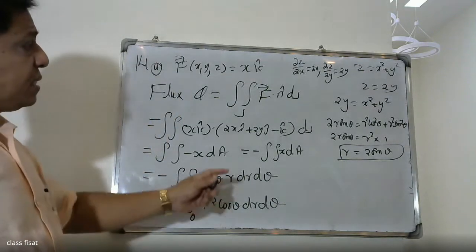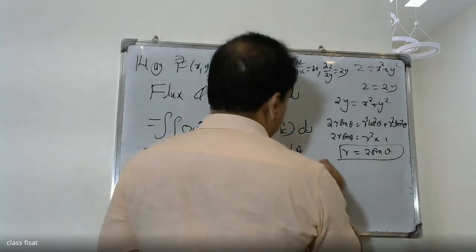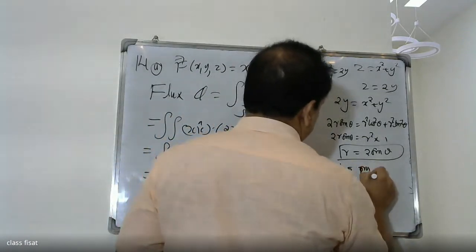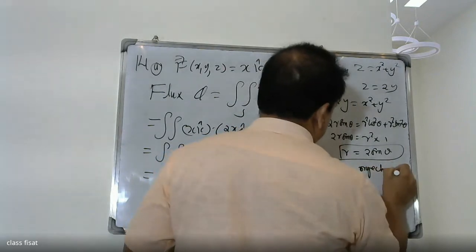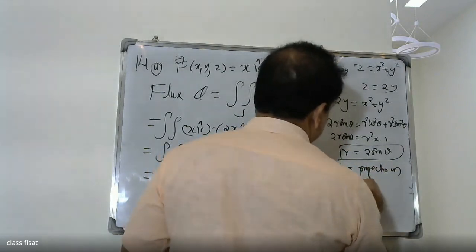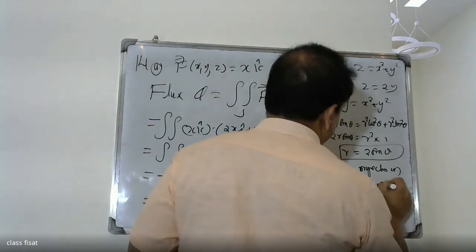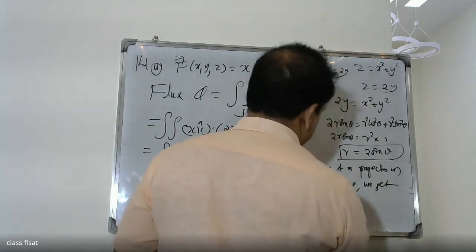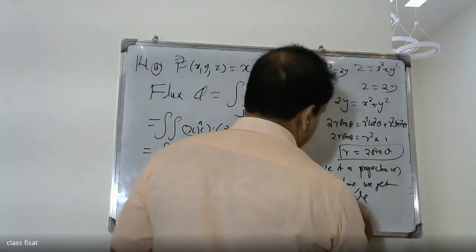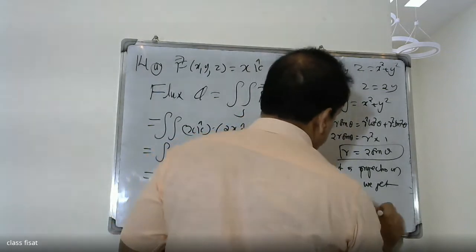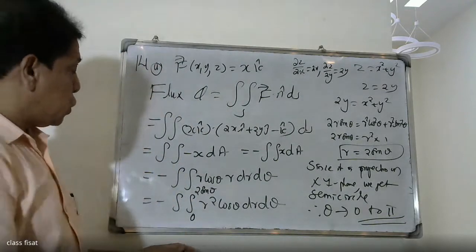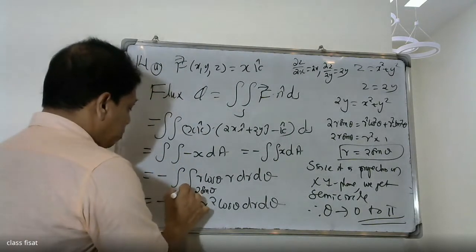Since it is a projection on the xy-plane, we get a semicircle. Therefore, the θ limit is 0 to π, and r goes from 0 to 2·sinθ.